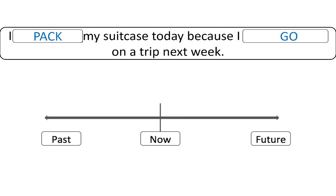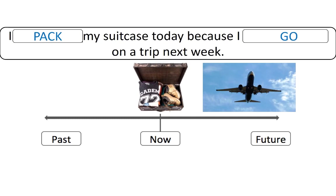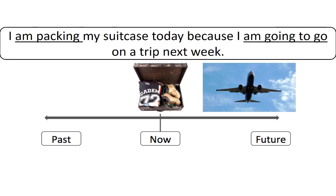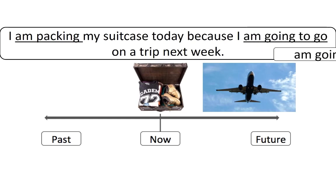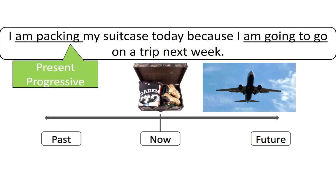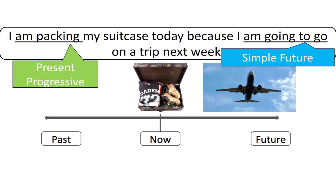Try another example: 'I my suitcase today because I on a trip next week.' The correct answer is: 'I am packing my suitcase today because I am going to go on a trip next week.' You could also say 'I am going on a trip next week' because this is a planned event. Here we have the present progressive because this is today — now, not a habit — and simple future for something that will occur after now.